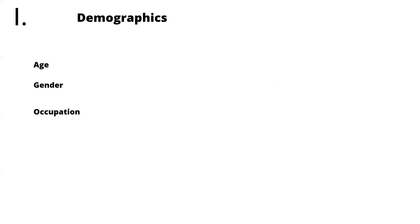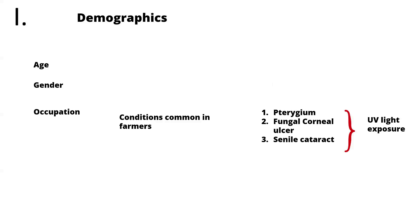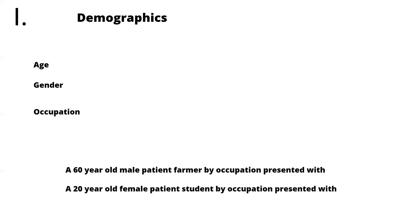Then ask about gender and occupation. Common conditions in farmers — a frequently asked examiner question — include pterygium, fungal corneal ulcer, and senile cataract due to UV light exposure. Fungal corneal ulcer occurs because of increased risk of injury from vegetative matter. When presenting to the examiner, summarize demographics in a single sentence, for example: 'A 60-year-old male patient, farmer by occupation, presented with...' or 'A 20-year-old female student presented with...'